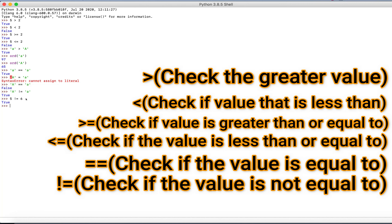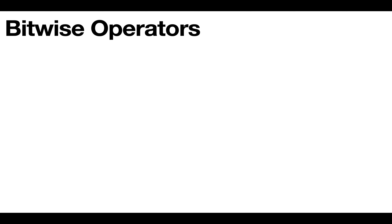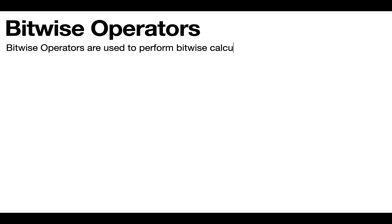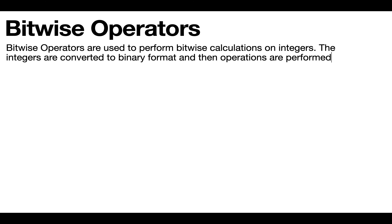Now let's move on to the bitwise operators. Bitwise operators involve binary. If you don't know what binary is, a brief explanation: it is a number system in base 2 that is only made up of two digits, 0 and 1. The code you write in Python is processed into binary so computers can understand the instructions. Each digit, 0 or 1, is called a bit. So bitwise operators are used to perform bitwise calculations on integers.